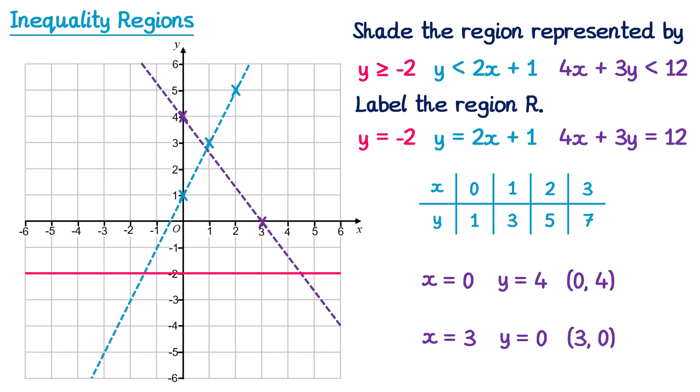Now we identify which region satisfies all three inequalities. For y ≥ −2 we need to be above the red line — red arrow pointing up. For y < 2x + 1 we need to be below the blue line — blue arrow pointing down. For 4x + 3y < 12 we need to be below the purple line — arrow pointing down from it. The region where all of these hold is the triangle in the middle, so we label that R.